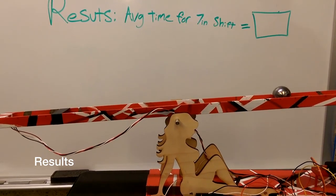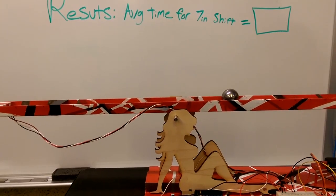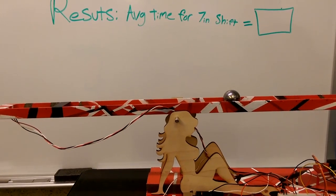Our system was able to quickly adjust where the ball was being balanced and achieved an average time of 6 seconds to make a 7 inch adjustment.